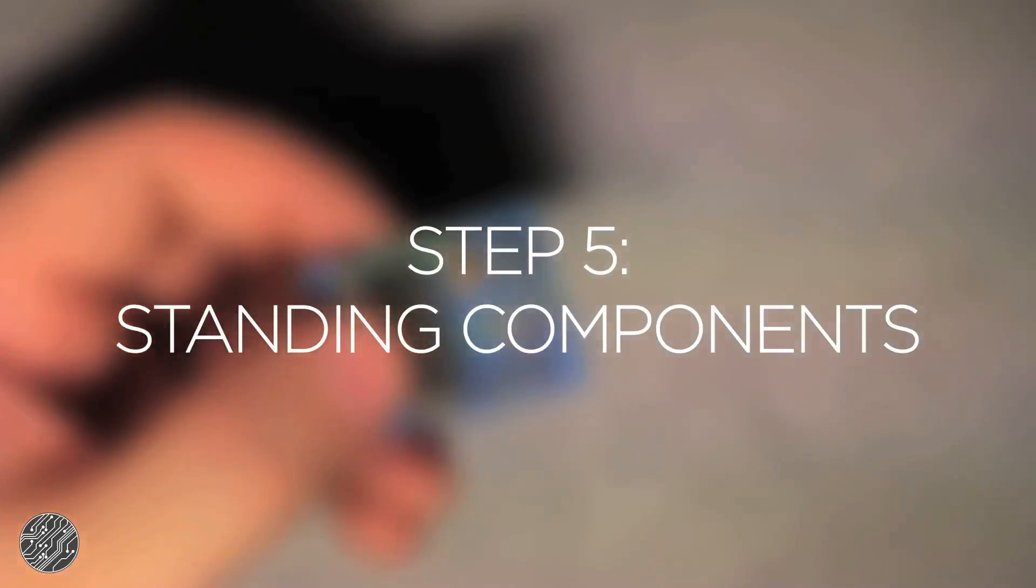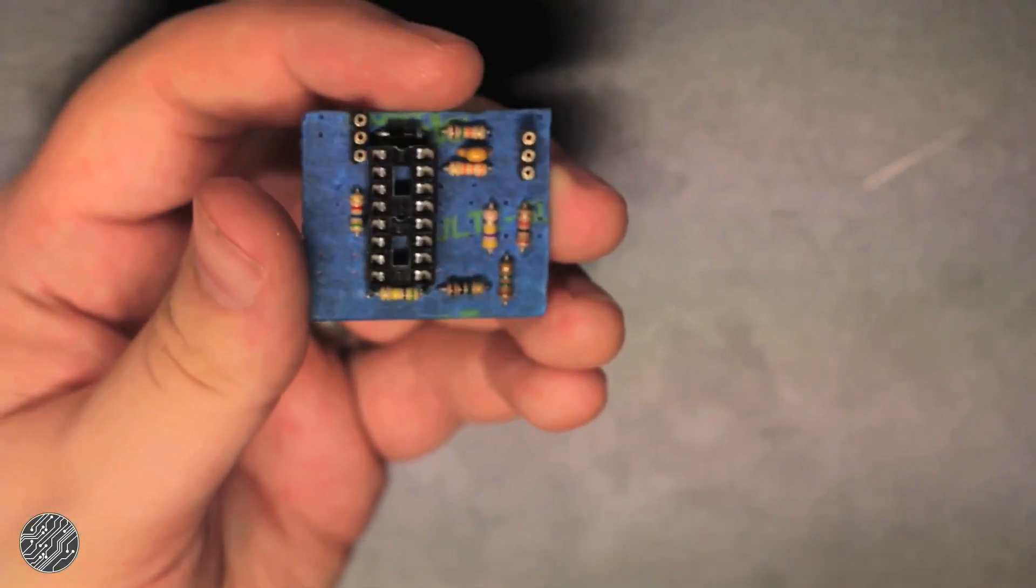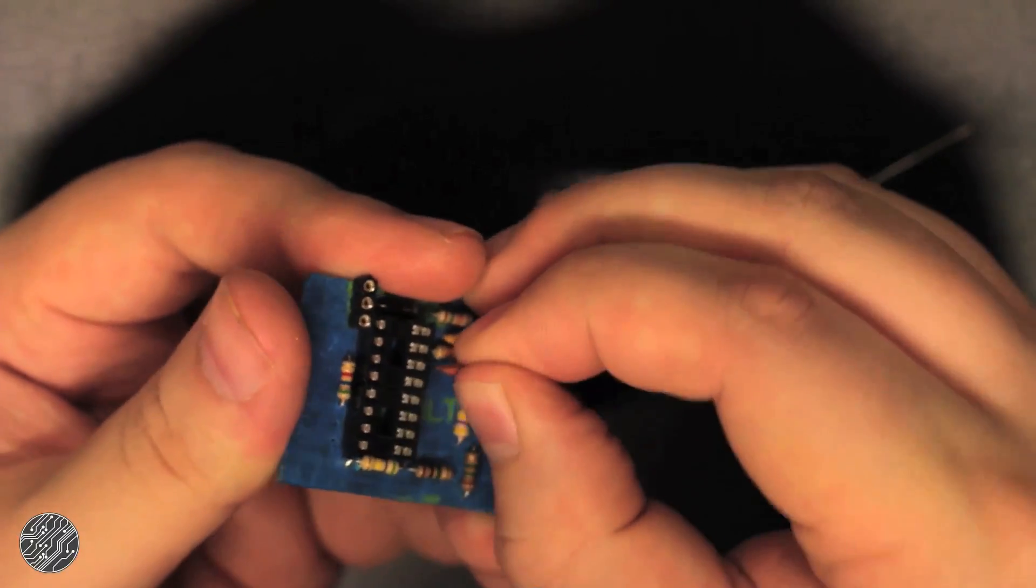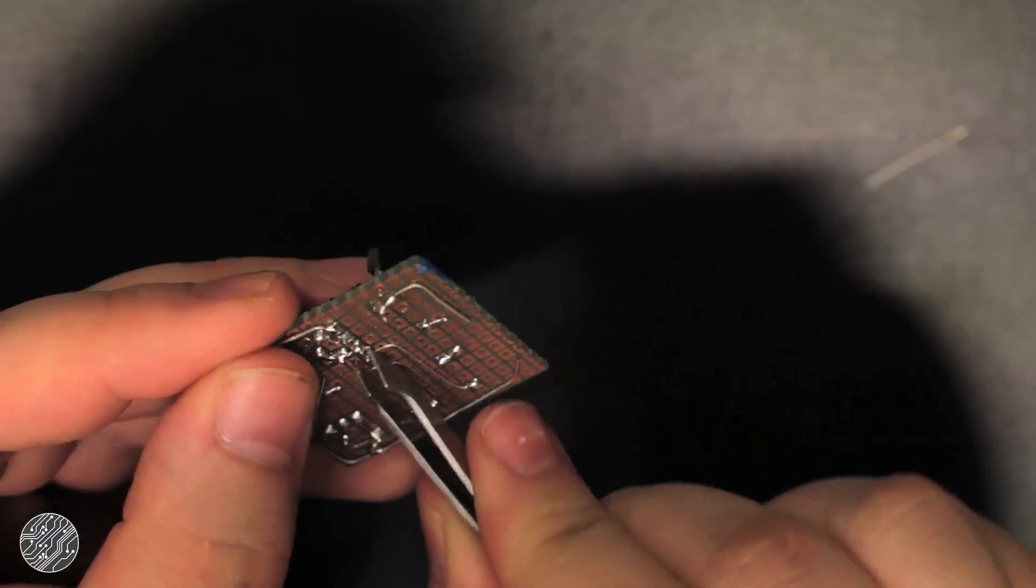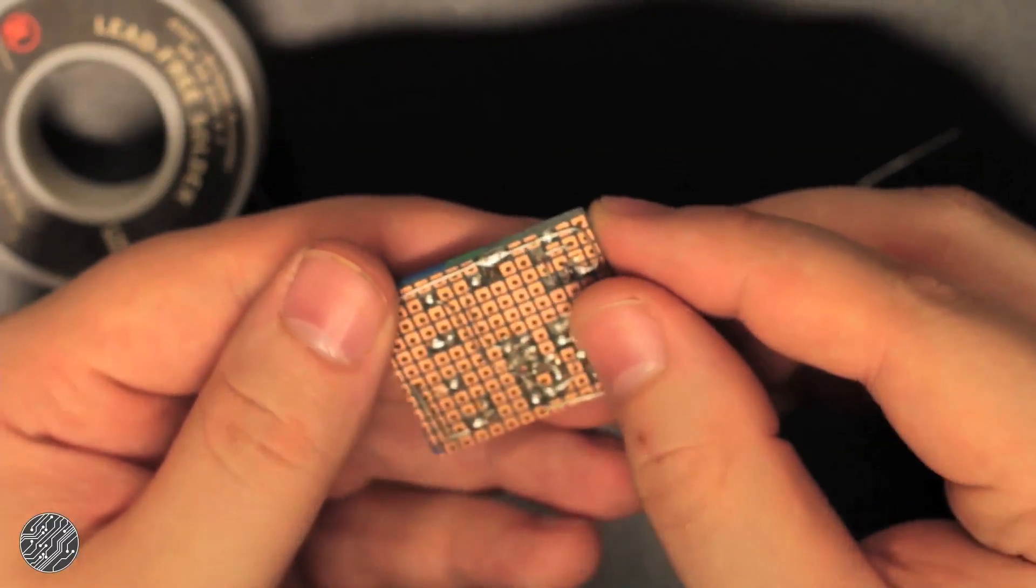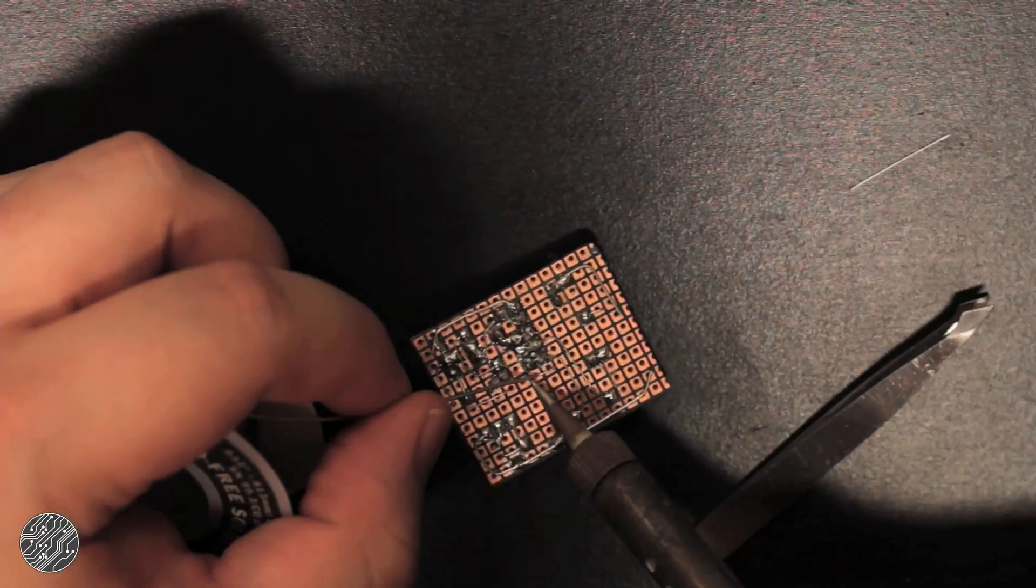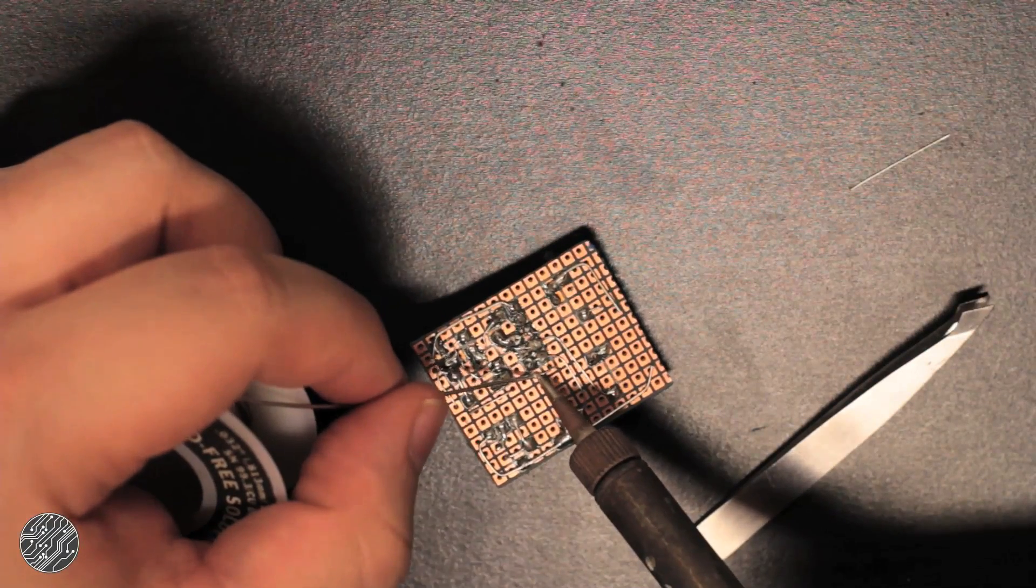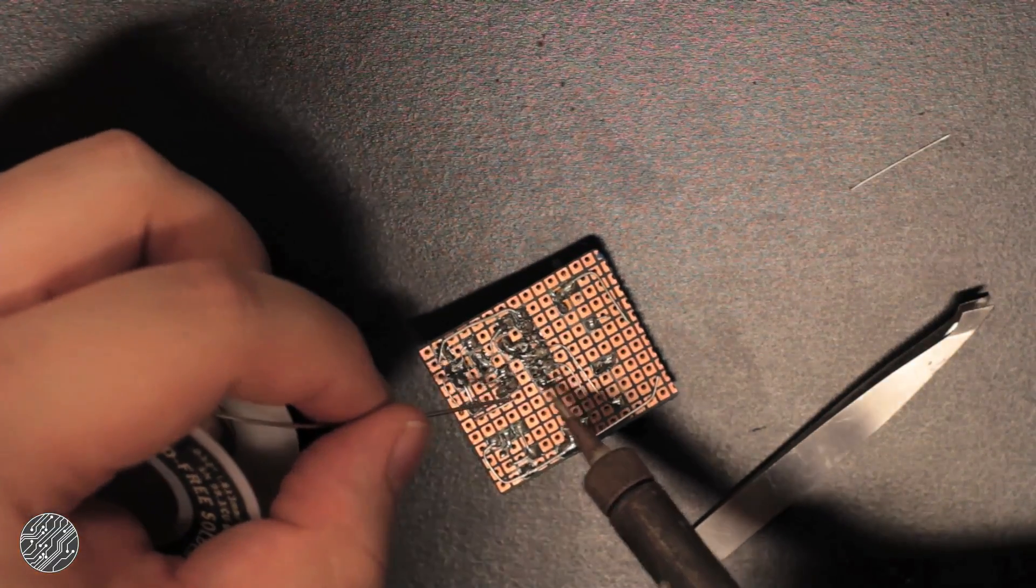Step five: standing components. Once the flat components are soldered to the board, you'll probably have a lot of the traces formed. This means there will hopefully be less lead bending as you populate the capacitors. Start with the smallest caps and work towards the largest. Here I'm using ceramic caps for all values except the power filtering capacitor.